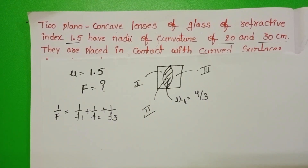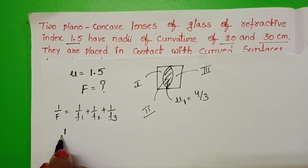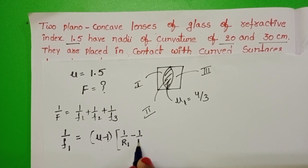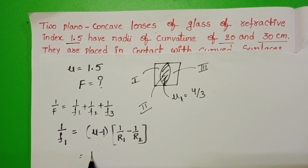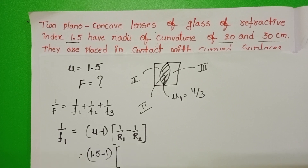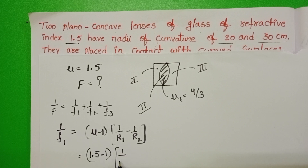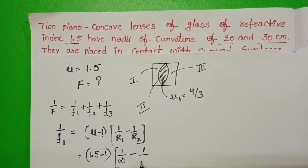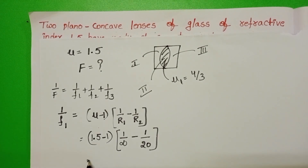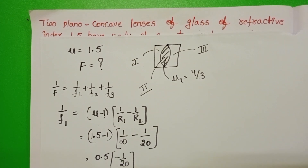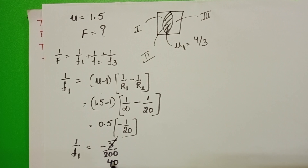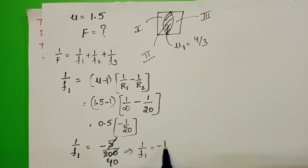First, find the focal length of each individual lens. For the first plano-concave lens, using the lensmaker's formula: 1/F1 = (μ - 1)(1/R1 - 1/R2). The refractive index is 1.5. The first surface is plane, so R1 = infinity. The curved surface has radius 20 cm. This gives 1/F1 = 0.5 × (0 - 1/20) × ... = -5/200, so 1/F1 = -1/40.